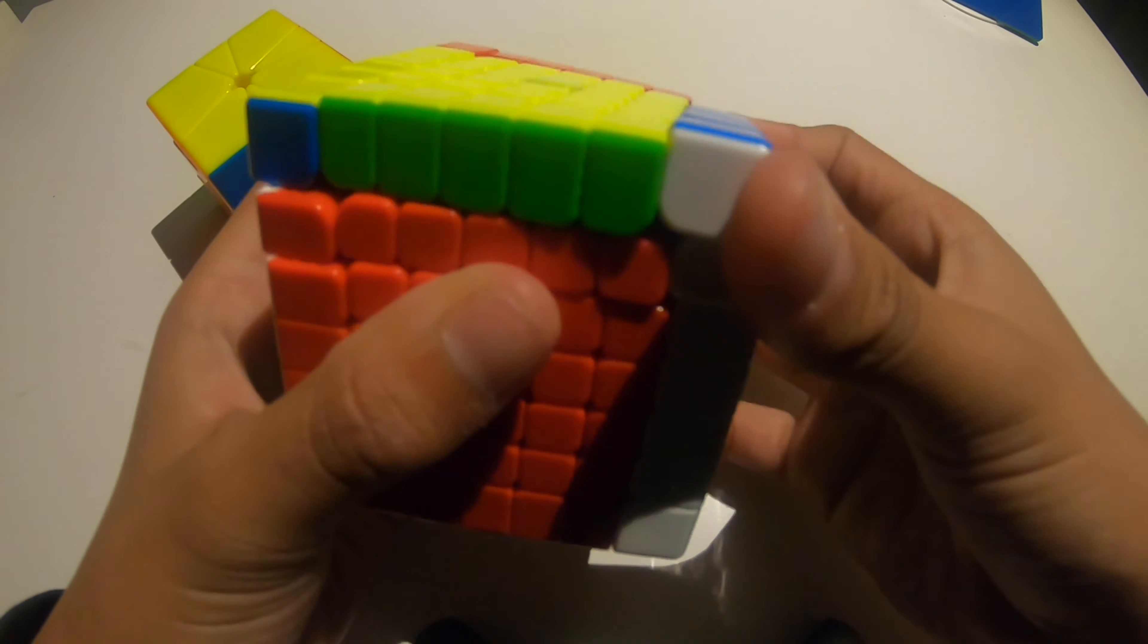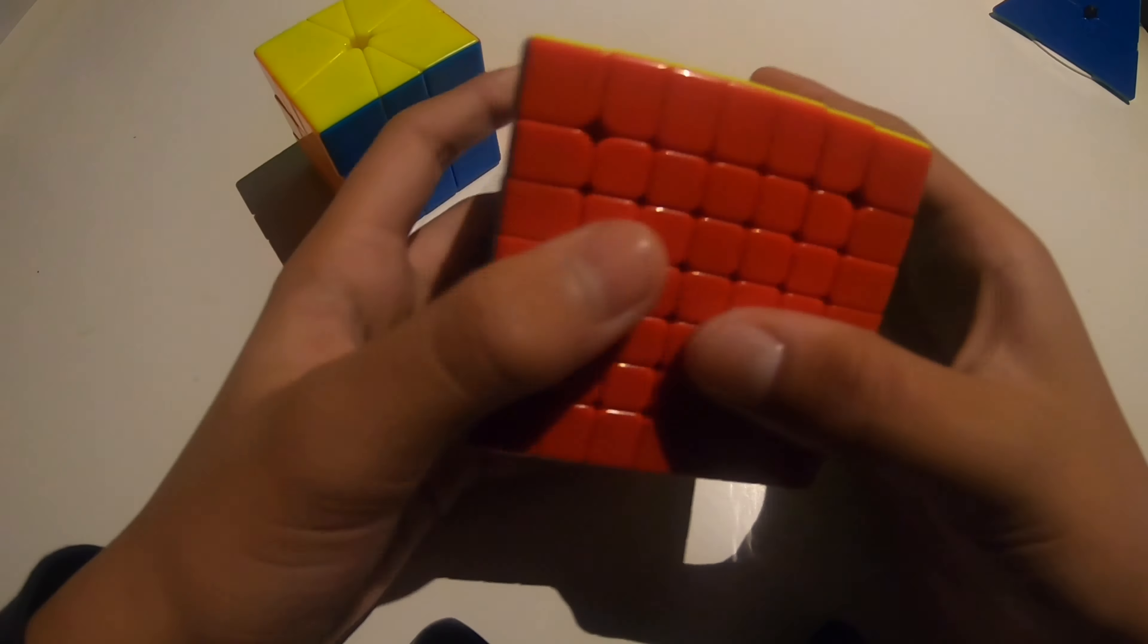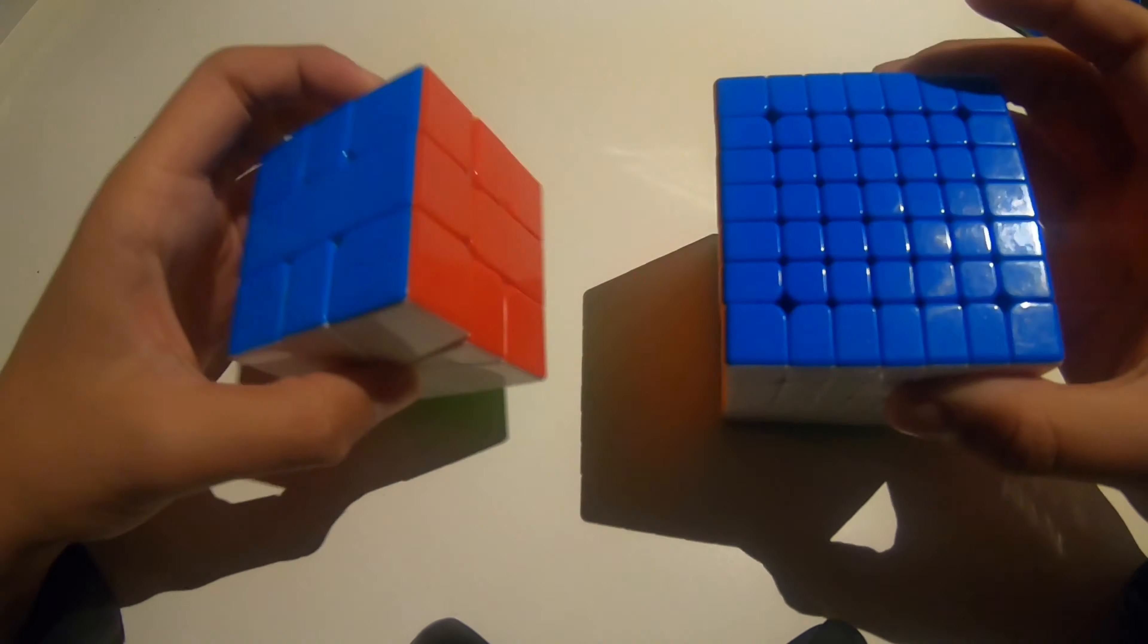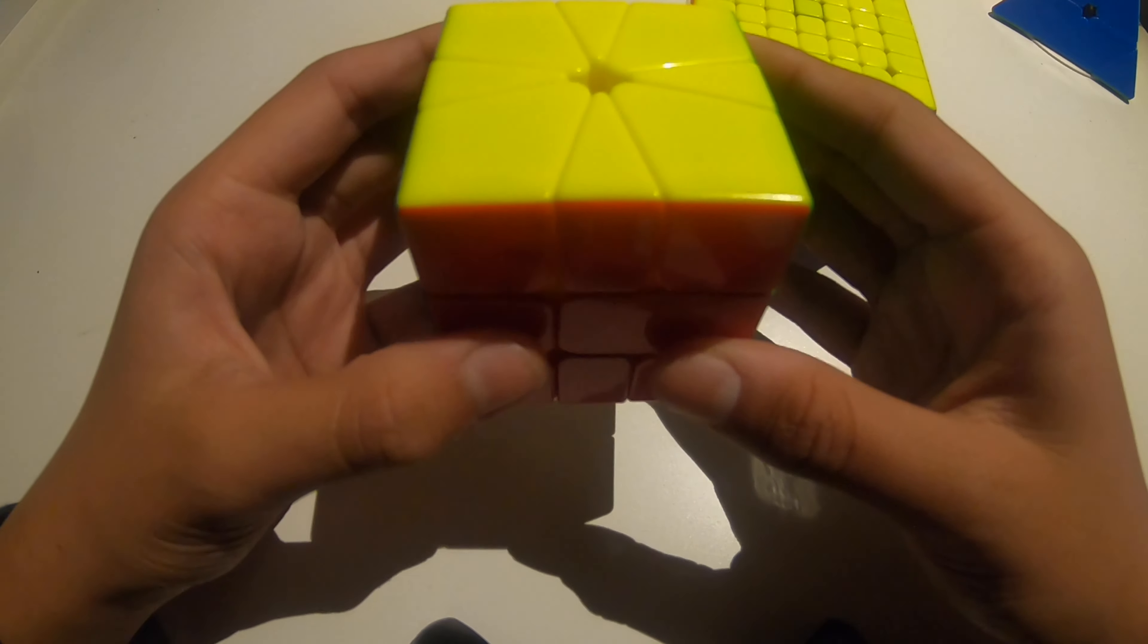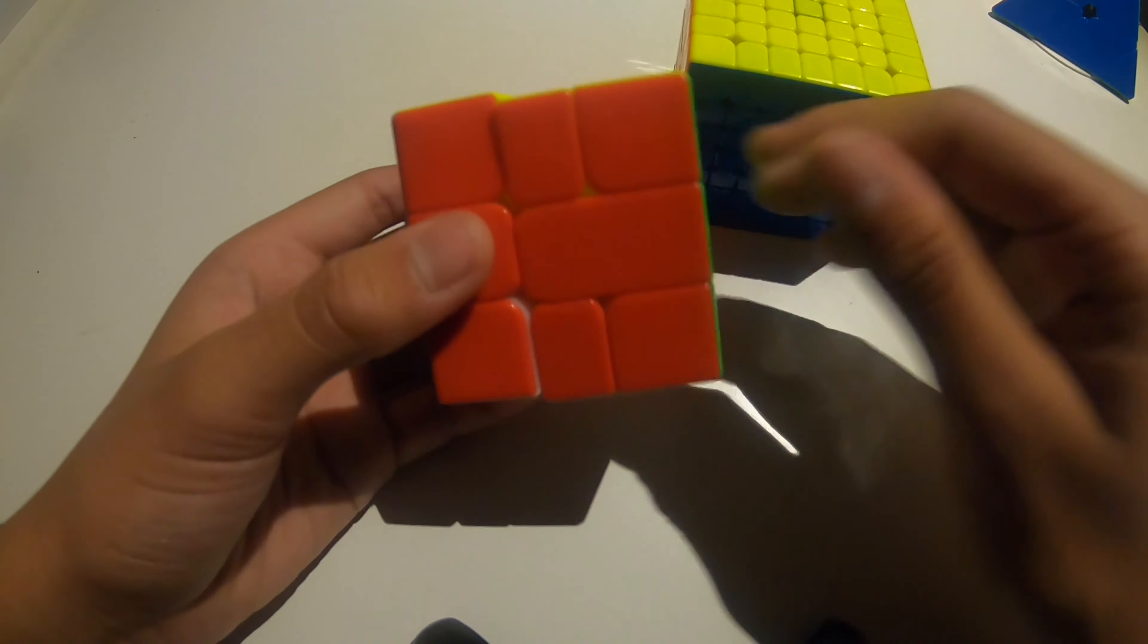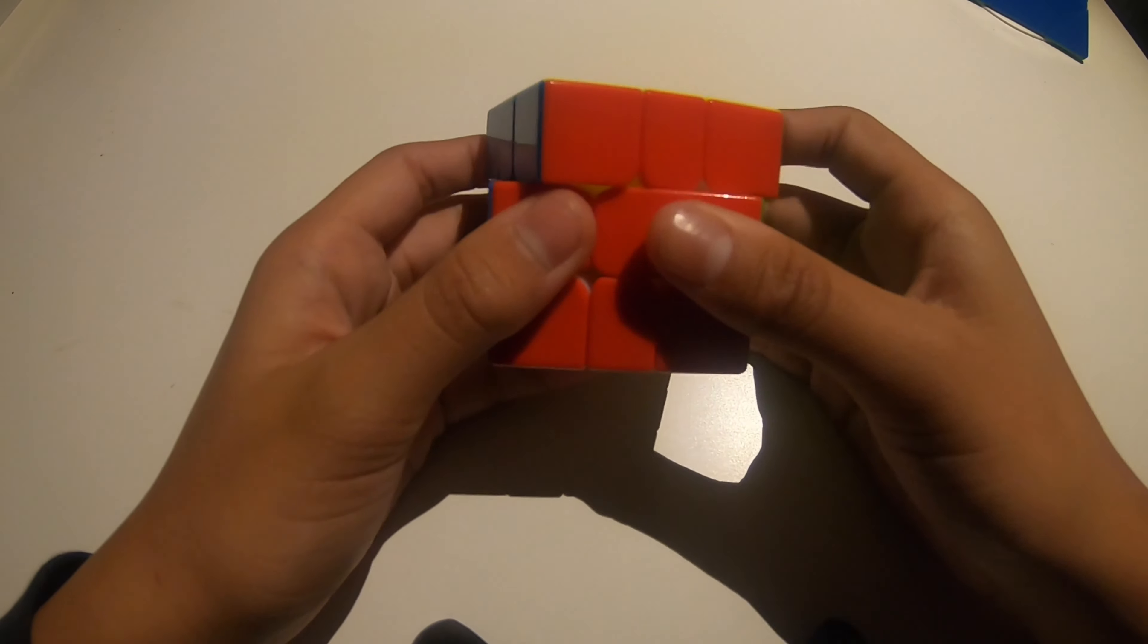So speaking of this YJ cube, the colors are pretty much the same as, say, a YJ magic cube. They are basically the same. It's got this nice glossy plastic which I like better. And if you want to see the color contrast, here it is.